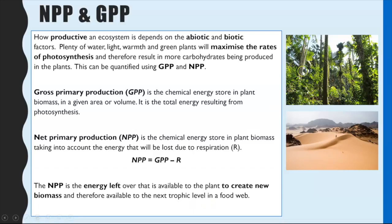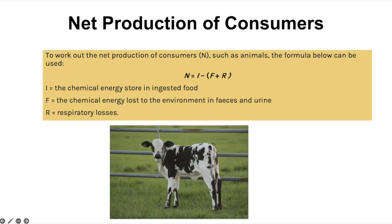I've got two examples here: the rainforest and a desert ecosystem. The rainforest has plenty of water, lots of green plants, and both have lots of light availability, but the rainforest will have far more photosynthesis and therefore a much higher GPP. It will therefore have a higher NPP, so a rainforest ecosystem will be far more productive compared to a desert.